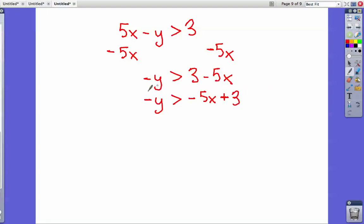Now, since we have a negative y, we have to divide by negative 1 to get rid of the negatives. So now we just have y, but whenever you divide by a negative, you have to switch the sign. So since it was going this way, now it's going to switch and go the other way. A negative divided by a negative is a positive, so it would be 5x. A positive divided by a negative is a negative, so we have 5x minus 3.